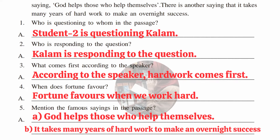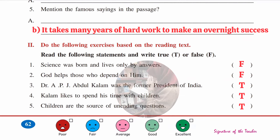Continuing worksheet 4.5 comprehension: fourth question — when does fortune favor? Answer — fortune favors when we work hard. Fifth: mention the famous sayings in the passage. Answer — (a) God helps those who help themselves; (b) it takes many years of hard work to make an overnight success.